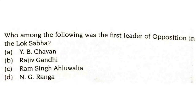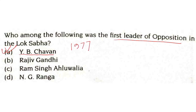Who among the following was the first leader of opposition in the Lok Sabha? The options are YB Chavan, Rajiv Gandhi, Ram Singh Alwalia, or NG Ranga. It is YB Chavan. This post was created for the first time in India in the year 1977, and he was the first one to be the leader of opposition from the Congress party.